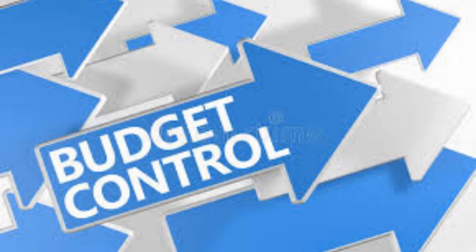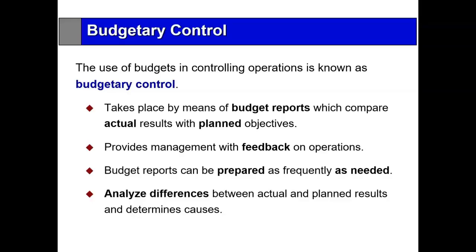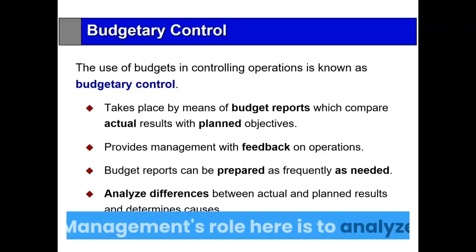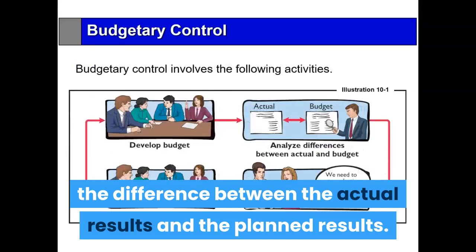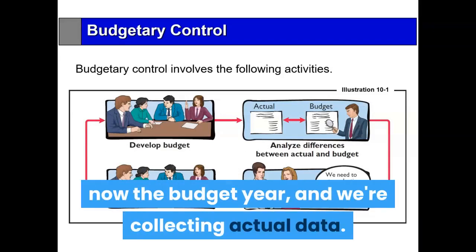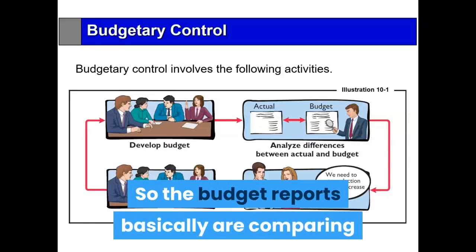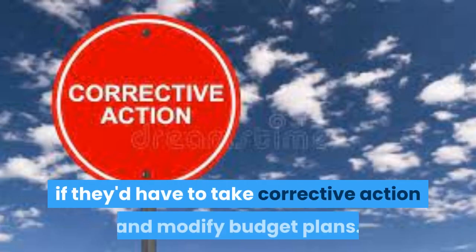In this module we're going to look at how we use the budget to control operations. Budget control means many different budget reports. Each report is comparing the actual results with the planned objectives, and in this way management gets feedback. Management's role is to analyze the difference between the actual results and the planned results. The budget reports are comparing the actual data to the budgeted data, and that gives management what they need to determine if they have to take corrective action and modify budget plans.